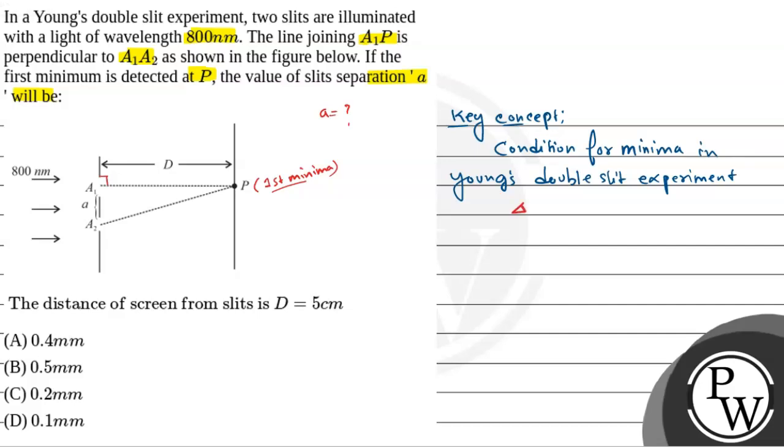Let's say ki path difference is del x. So if del x is equal to (2n+1) lambda by 2 for n ka value 0, 1, 2 and so on, and lambda is the wavelength. So ye hai humara condition for minimum. Now, first minimum we have to do for n equals to 0. For n equals to 0 first minimum hoga that is for lambda by 2. So for the path difference lambda by 2 we will see the first minimum.